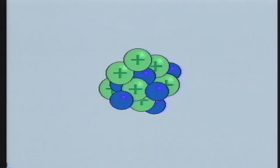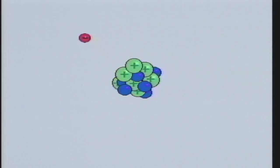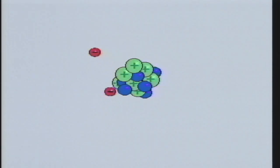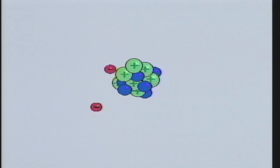Atoms contain a dense center, or nucleus, consisting of protons, which are positively charged, and neutrons, which have no charge. The nucleus is surrounded by a system of electrons equal to the number of protons.